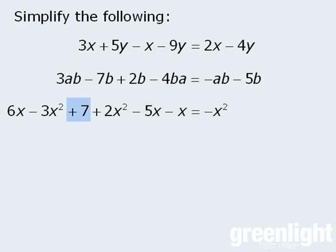Finally, we have this constant +7, and since there are no other constants to combine this with, we will leave it as +7. So the somewhat lengthy expression on the left-hand side simplifies to -x² + 7.